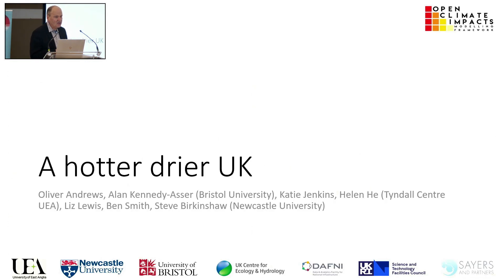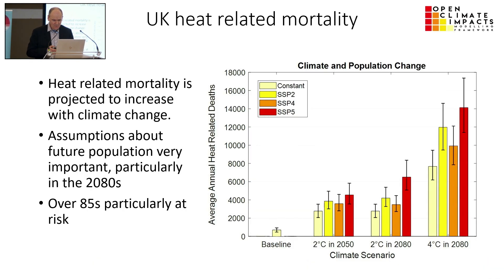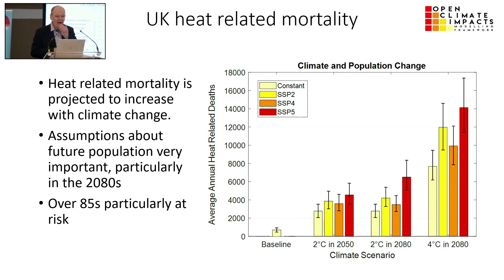Moving on now to a hotter, drier UK — looking at heat and drought. Heat-related mortality is projected to increase with climate change, and increases in population are also quite important, particularly in the 2080s. You can see the numbers for 2 degrees in 2050, 2 degrees in 2080, and 4 degrees in 2080, with very large increases — particularly with SSP5 which has the largest population increase. Under 4 degrees with the socioeconomics, you're almost getting an order-of-magnitude effect.